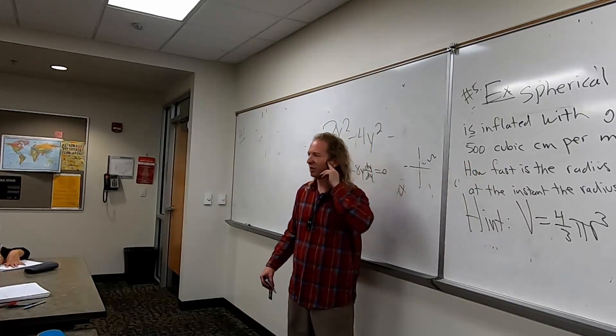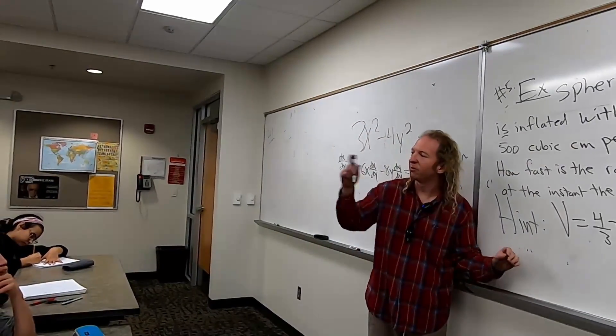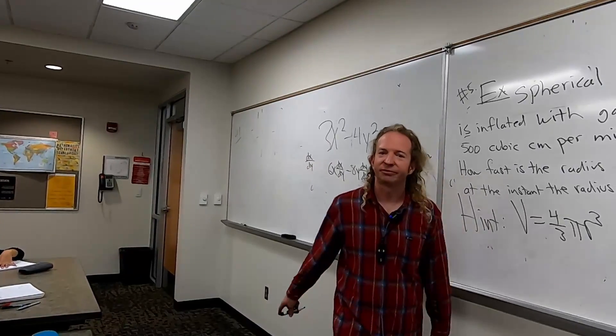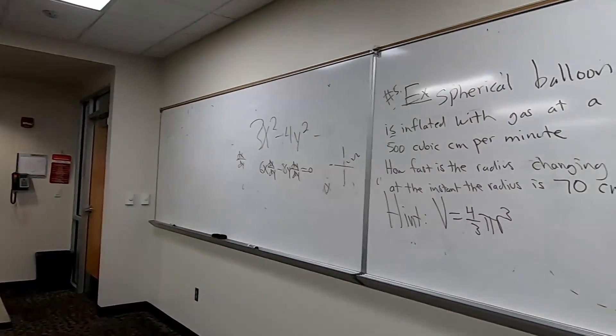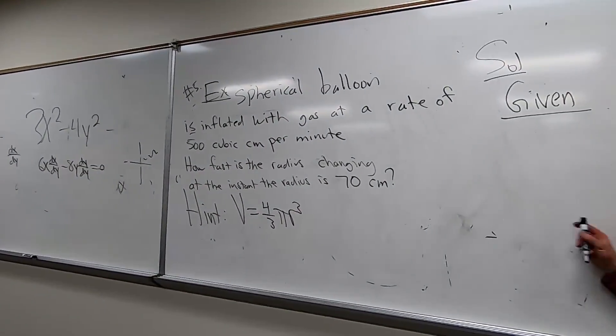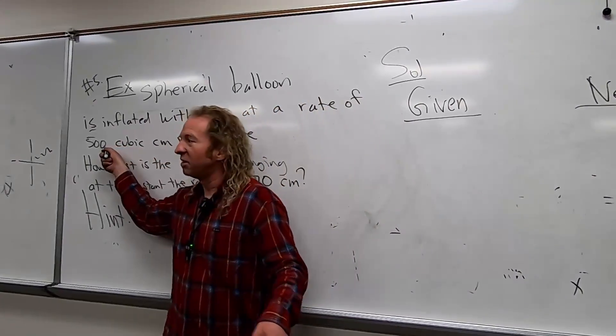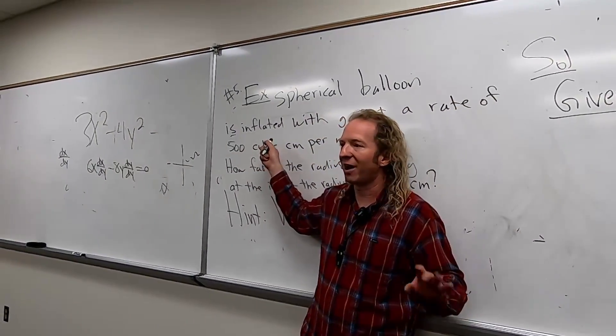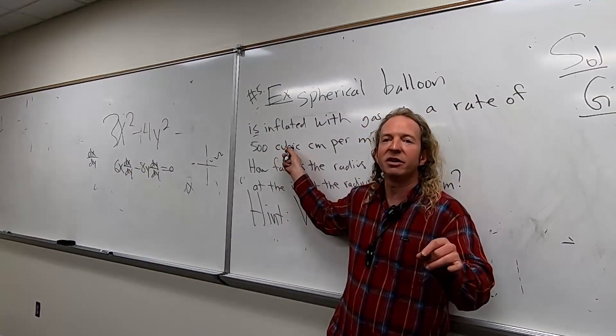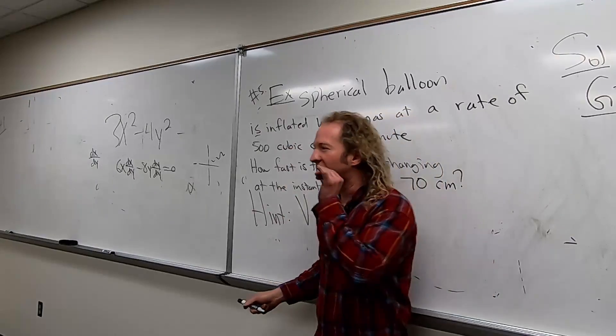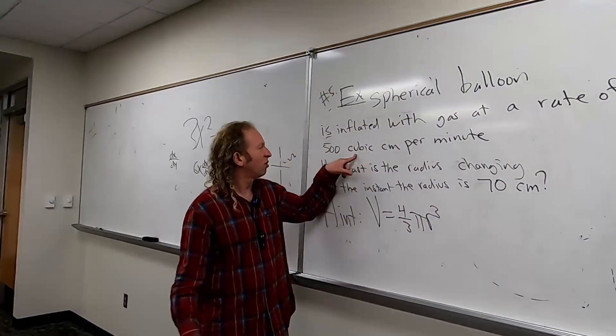There's a key word there that tells us what it is. How do you know it's volume? Beautiful. Let me hear what Josh said. That's key. So you know that this is dV/dt because it says cubic. Cubic is volume, right? Squared is area. So because it says cubic, you know this is volume.